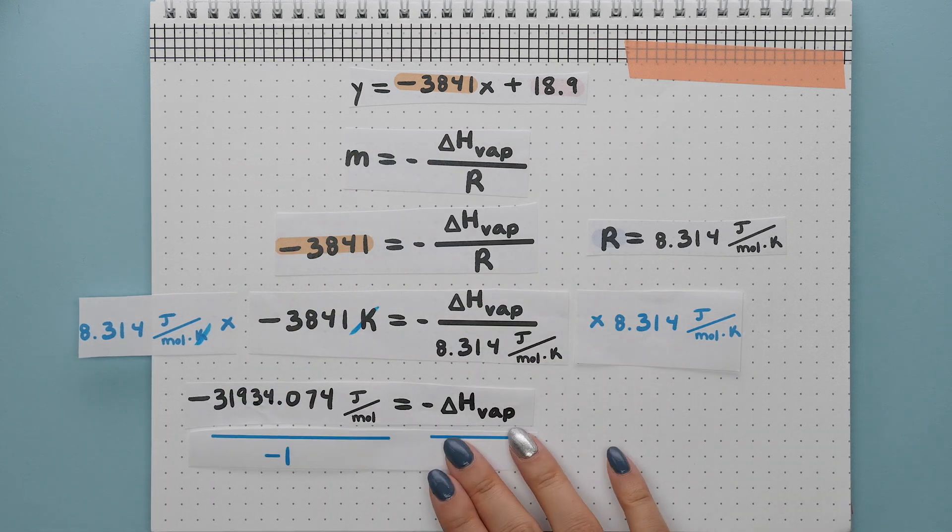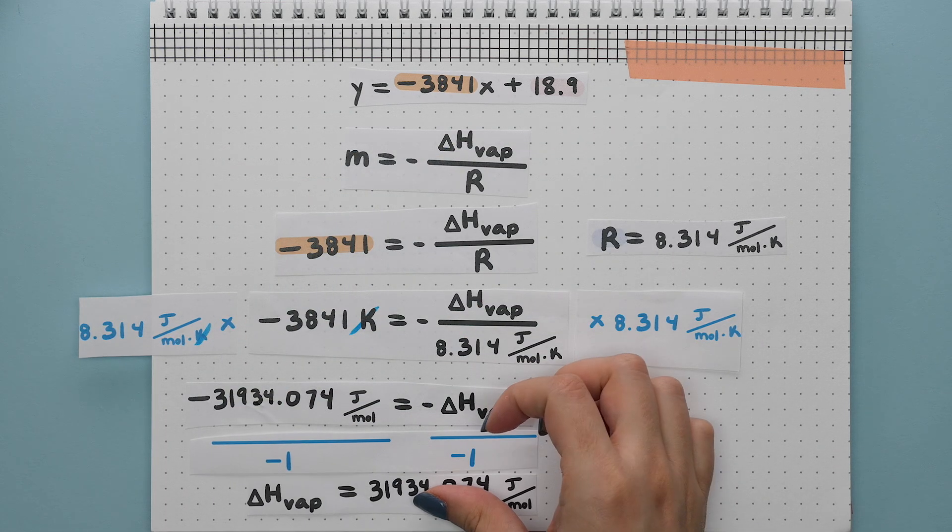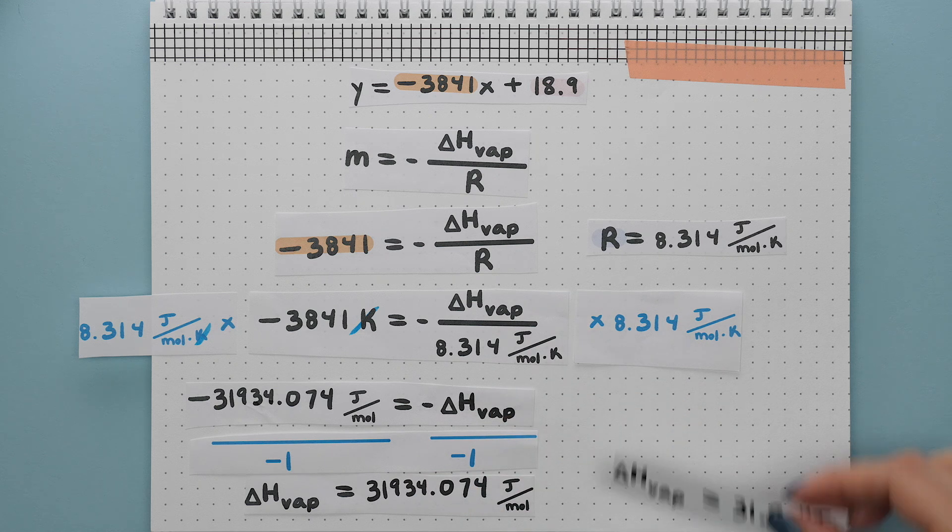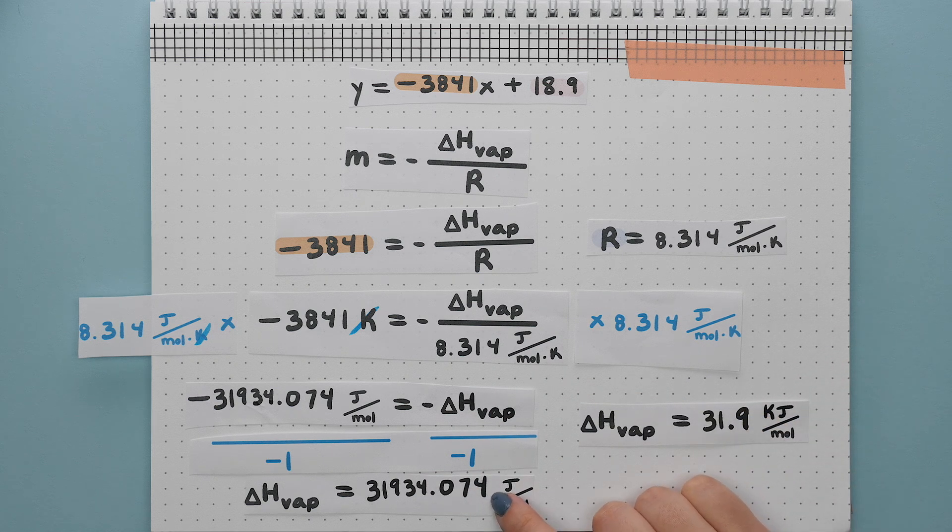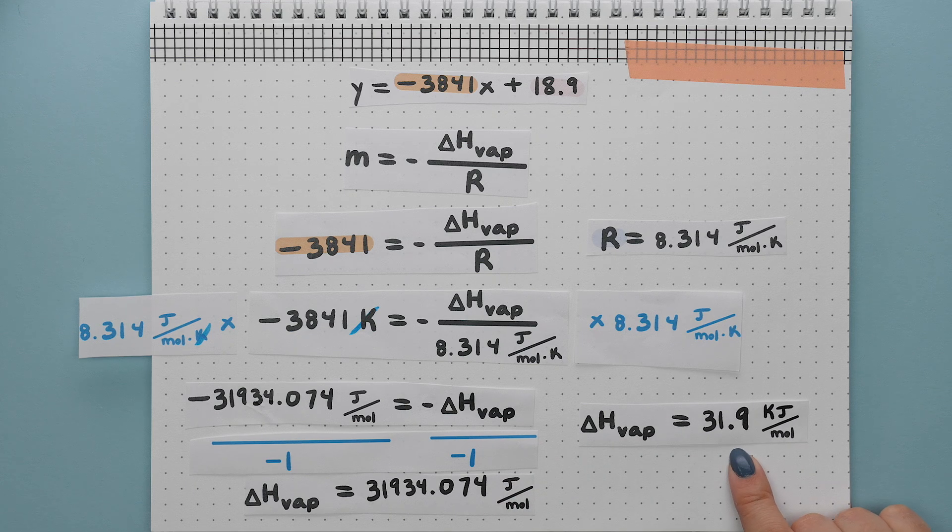Divide both sides by negative one to get the heat of vaporization by itself. The typical units are kilojoules, so we can divide by a thousand to get our answer in the correct units.